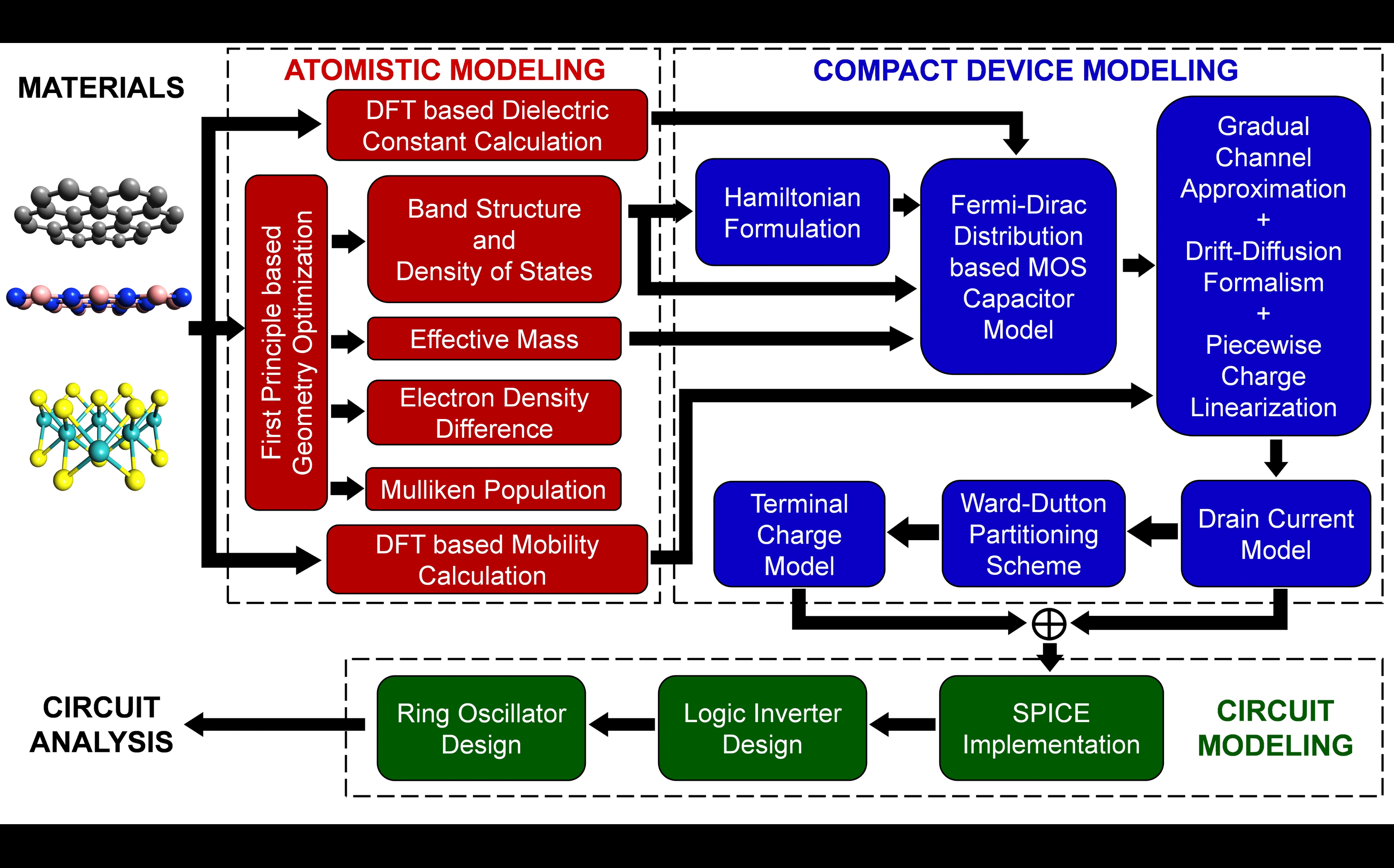We have first carried out the density functional theory calculations of the van der Waals heterostructure comprising of graphene, two layers of hBN, and molybdenum disulfide. Here graphene works as the gate electrode of the metal insulator semiconductor structure, hBN works as the 2D insulator, and MoS2 works as the 2D semiconducting material.